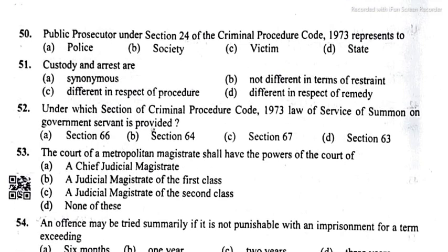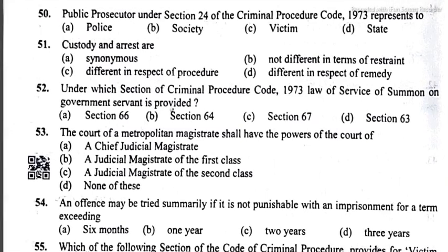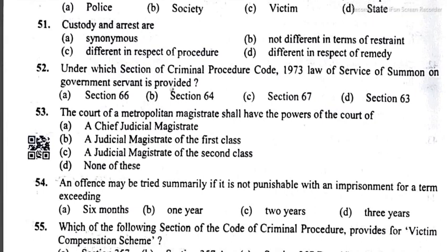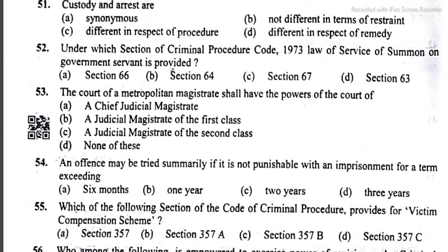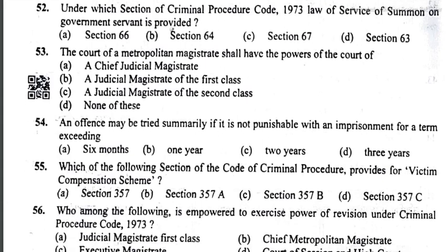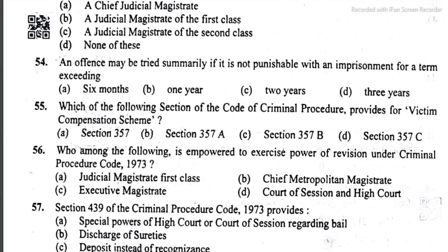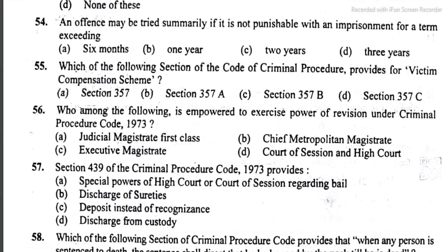Question 51: the answer is option C, different inspectors procedure. Question 52: the answer is option A, section 66. Question 53: the answer is option B, a judicial magistrate of the first class. Question 54: the answer is option C. Question 55: the answer is option B, section 357A.